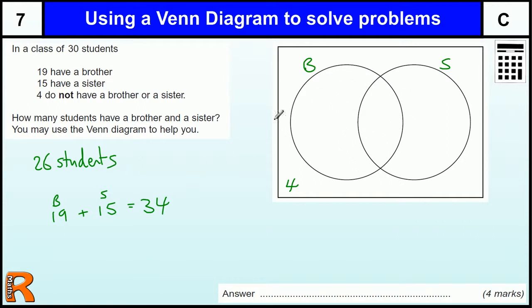This bit in the middle, which is the overlap, must be the difference between 26 and 34. So 34 minus 26 gives us 8. And that's how many must go in the intersection, the overlap, because they've been counted twice. Once for the brothers and once for the sisters.